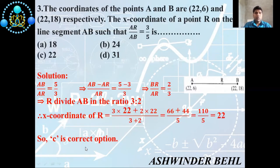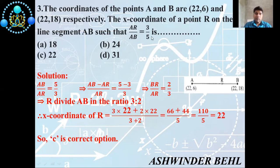Third question: the coordinates of points A and B are (22, 6) and (12, 18). The x-coordinate of point R on line segment AB such that AR/AB = 3/5. There are four options for the x-coordinate: (a) 18; (b) 24; (c) 22; (d) 31.